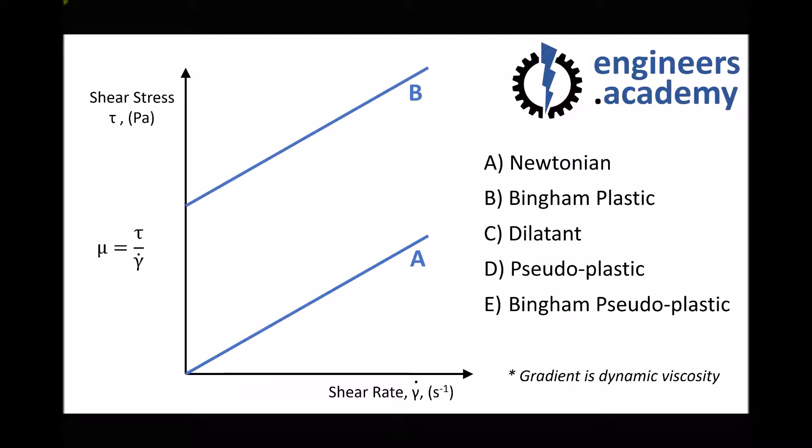So next we have a Bingham plastic. What we notice is that a Bingham plastic also has constant viscosity. But what we notice is that the shear stress, shear rate graph doesn't go through the origin. What it means is that it takes a certain amount of shear stress before the fluid yields and begins to behave or flow like a fluid. So we need to apply stress and up to a certain stress level, indicated by the intersection with the y-axis, the fluid doesn't flow. It behaves like a solid. And then when we reach that stress value, the fluid begins to flow like a Newtonian fluid. An example of a Bingham plastic fluid is something like toothpaste. So the terminology that we use here is that the fluid needs to yield before it begins to flow.